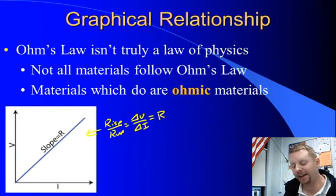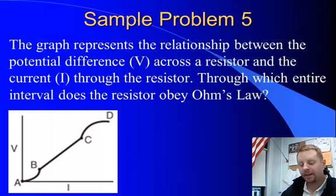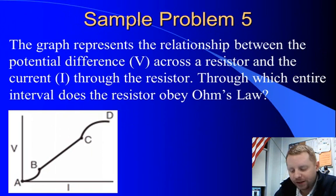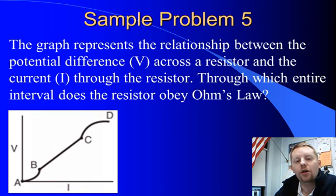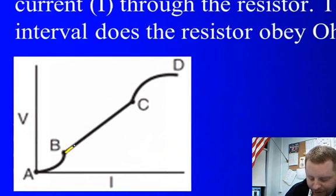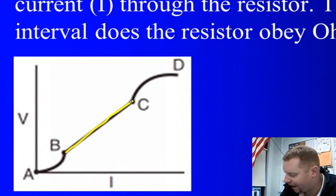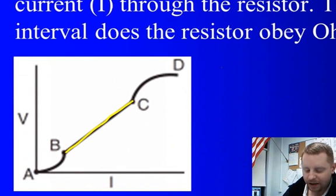Let's see how we can apply this. Here we have a graph showing the relationship between the potential difference across the resistor and the current flow through the resistor. During which interval does the resistor obey Ohm's law? If you'll recall, materials that are ohmic that obey Ohm's law have a linear current and voltage relationship. The only place this happens is here on that BC section. So, the interval over which the resistor obeys Ohm's law would be interval BC.